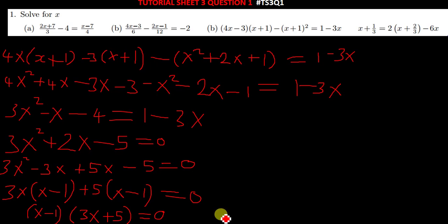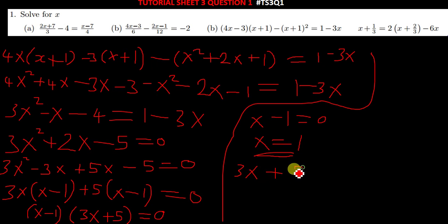You equate x minus 1 to 0, and make x the subject of the formula. Your value of x is equal to 1. So this is one root of this quadratic equation. And then we move on to the next equation. We have 3x plus 5, equate it to 0. So you have your x being equal to negative 5 over 3. So these are the roots of this equation. Meaning, they are the answers. They are the solutions of this equation.